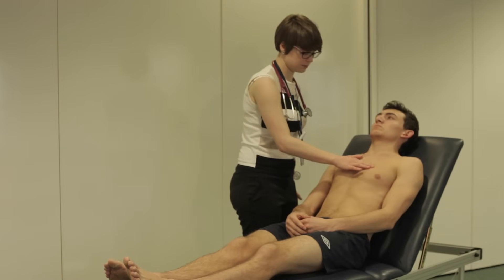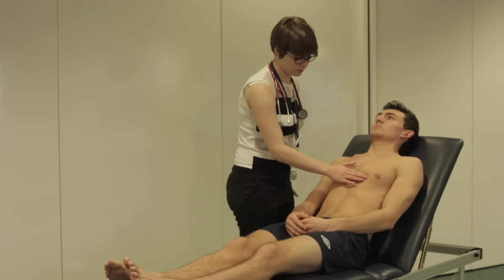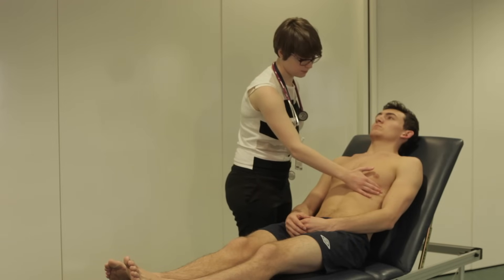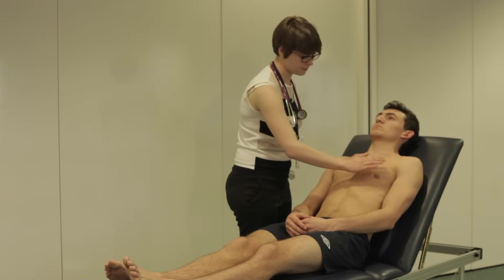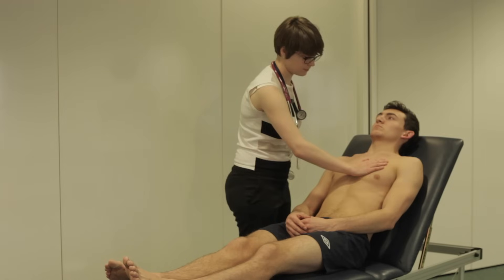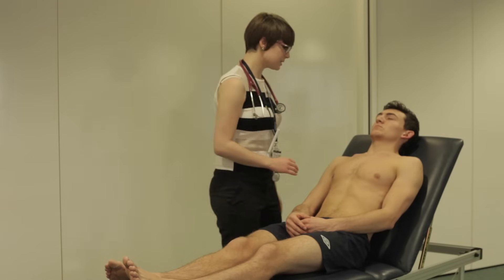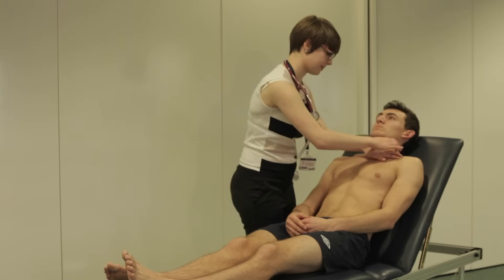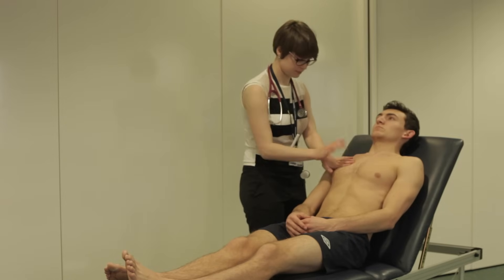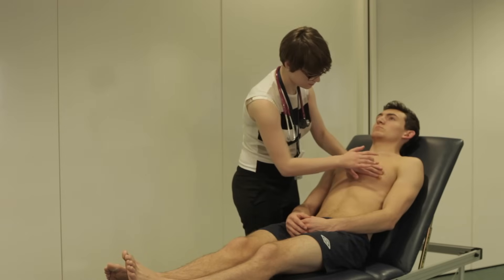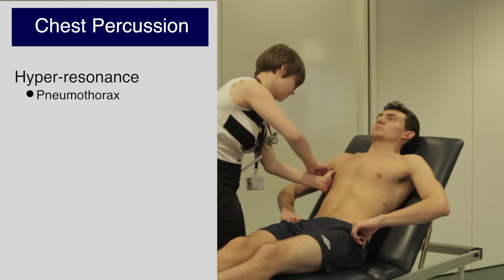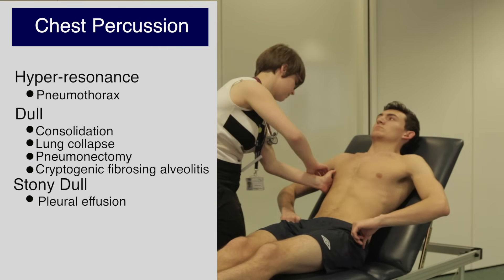The doctor is feeling for the apex beat in the 5th intercostal space in the midclavicular line, which can be displaced if the mediastinum is shifted by a pneumothorax. The doctor is also feeling for a right ventricular heave, which is present in cor pulmonale. The doctor then percusses in the upper, middle, and lower zones and the axilla, moving in an S shape to compare side to side, listening for hyper-resonance, dull resonance, and stony dull resonance.